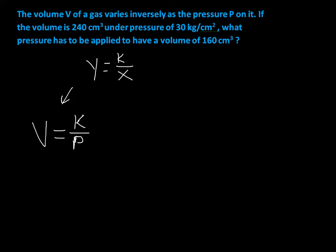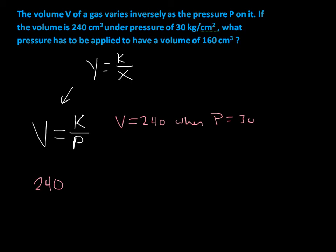The first thing we do is set up our equation. They tell us a value of V and P: the volume is 240 when the pressure is 30. So we plug those values in and solve for K. We get 240 equals K over 30. To get K by itself, we multiply both sides by 30. So 240 times 30 gives us 7,200 on this side, and the 30 cancels on the other side, leaving us with K equals 7,200.